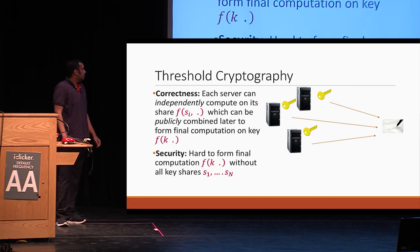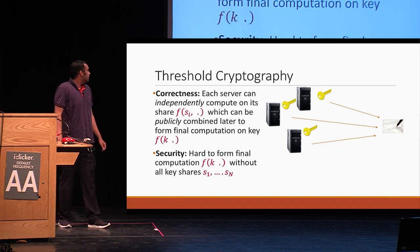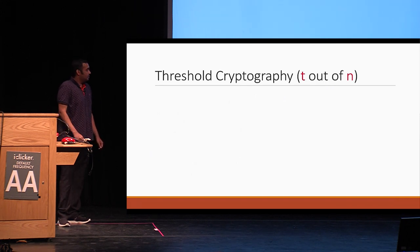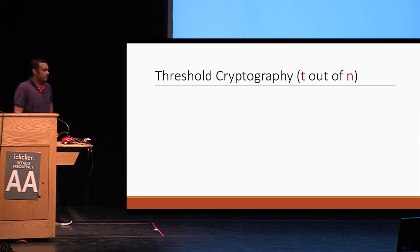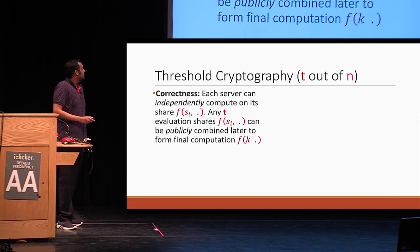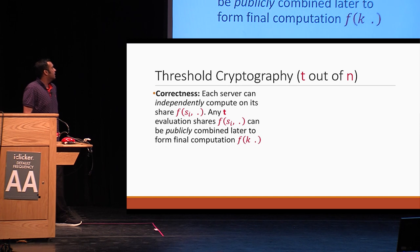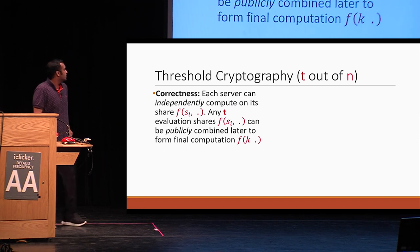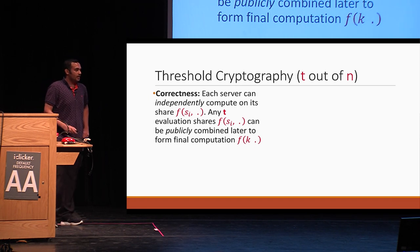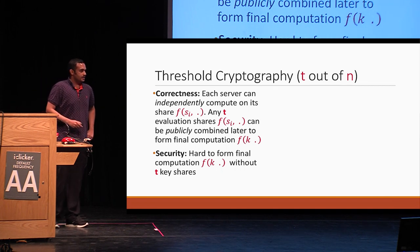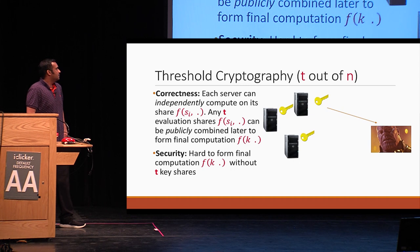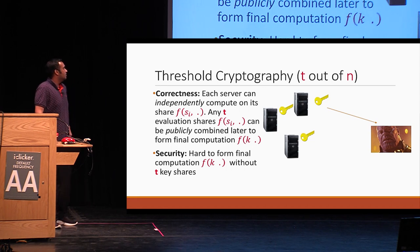From security, we want that it should be hard to form the final computation F of K without knowing all key shares. But in cryptography, we study more fine-grained access patterns, and a classical example is that of threshold, which is a T-out-of-N access pattern. From correctness, we want that each server can independently compute on the share F of S_i, and then any T evaluation shares can be publicly combined to form the final computation. From security, it should still be hard to form F of K without knowing T key shares. So suppose Thanos snaps and corrupts half of the servers on the earth — he should still be in trouble and not be able to break security.